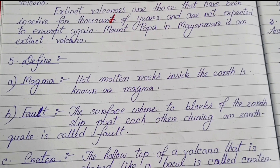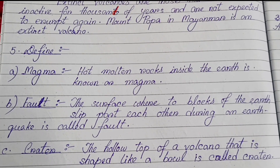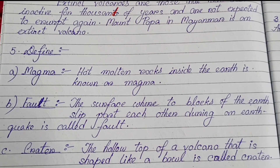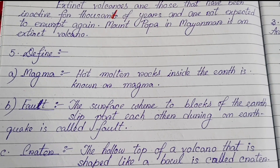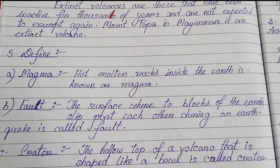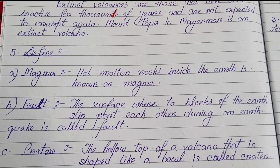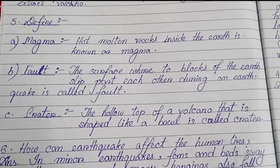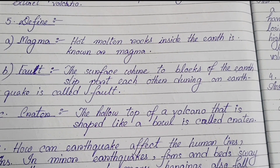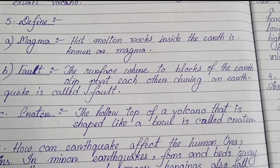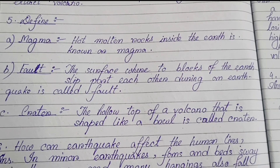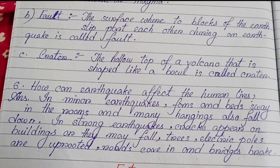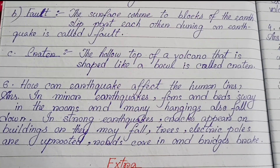Define: Magma — hot molten rocks inside the earth are known as magma. Fault — the surface where two blocks of the earth slip past each other during an earthquake is called a fault. Crater — the hollow top of a volcano that is shaped like a bowl is called a crater.